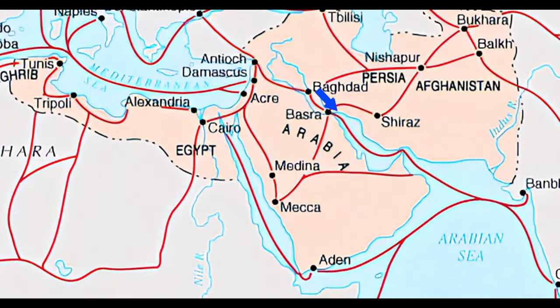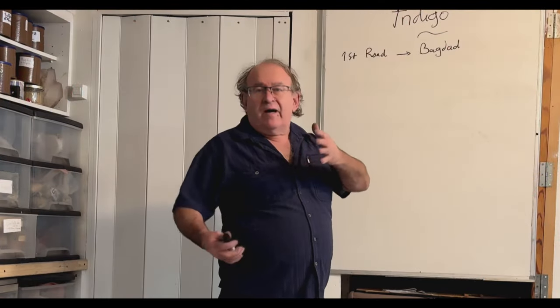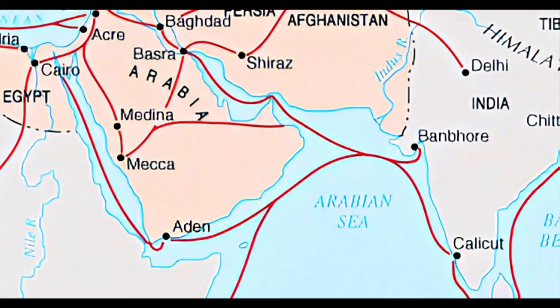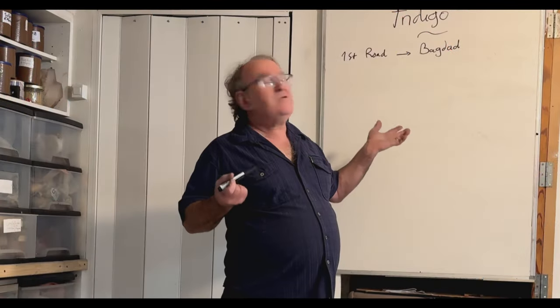In Basra, he takes his boat, probably a very small boat, and if you see the map, from Basra it is easy to follow the coast and you go to India. So he takes the indigo there, comes back to Basra, and back to Baghdad again. Then from Baghdad it goes to different countries, including Europe.